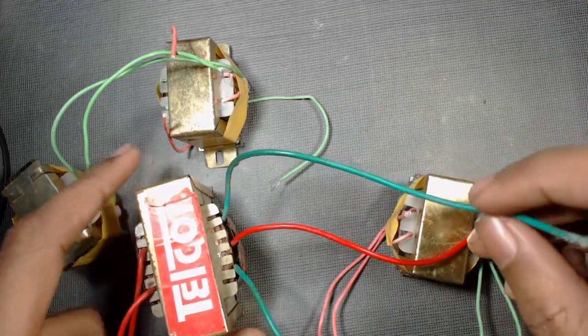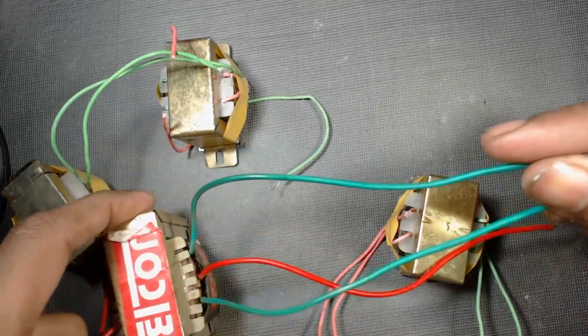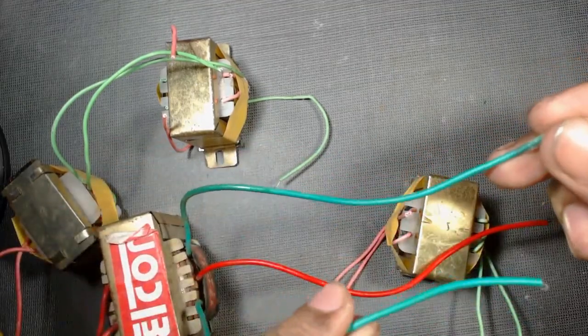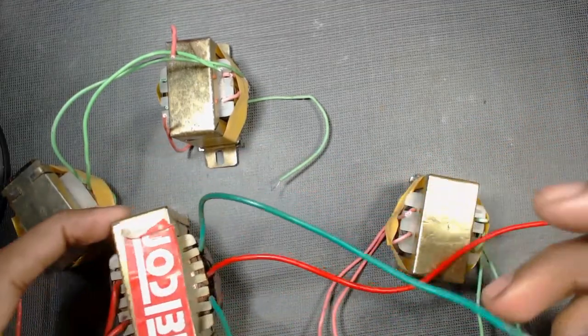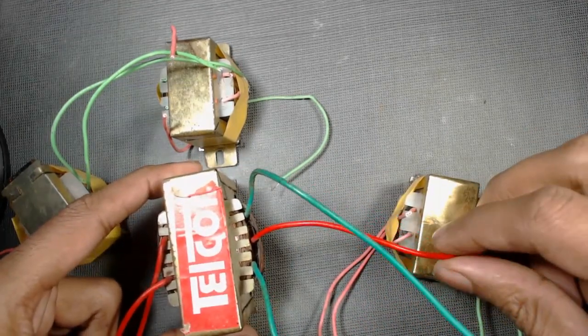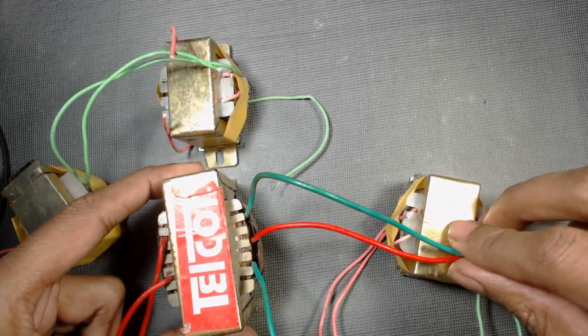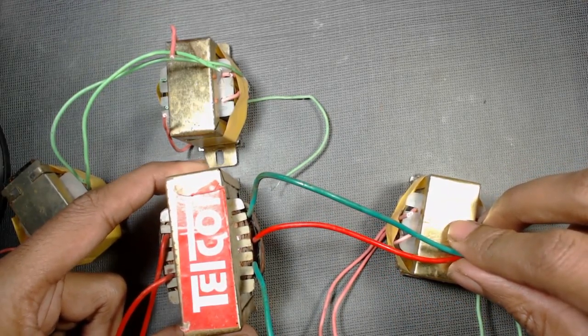If we connect our circuit at these end terminals, then we will get 24 volt AC. And we can easily convert it to DC by a rectifier circuit. If you don't know how to make a rectifier circuit, you can watch our videos given in the description of this video.